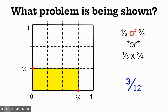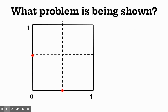One more — same thing. What problem is being shown right here in this model? Name both fractions on the number lines; look at the red dots. Each line has been divided into two equal parts, so each fraction is showing one of the two equal parts — that's one-half for each one.